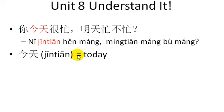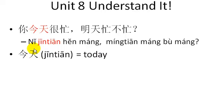If you remember Unit 7 and what happened in that dialogue, you may be able to guess what Baiying Ai is going to suggest to Wang Peng. She says 你今天很忙，明天忙不忙? 今天 is the word for today. 天 actually means sky, and in almost every culture, time and its measurement involves the sky — the sun, the moon, the stars. This is why this character appears in 今天, meaning today.